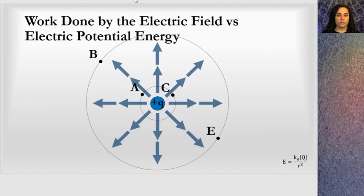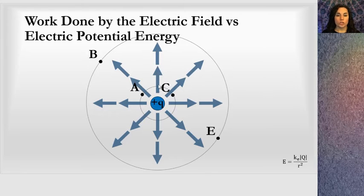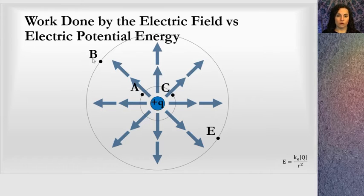The first thing I want to look at is just a point charge — a positive point charge. I've drawn electric field vectors, and you can see they're larger near the point charge than they are farther away. I've also drawn two equipotential surfaces, one closer in and one farther away, and there are different points marked here.